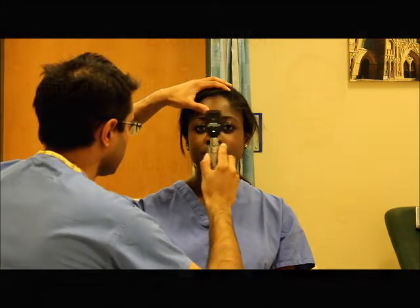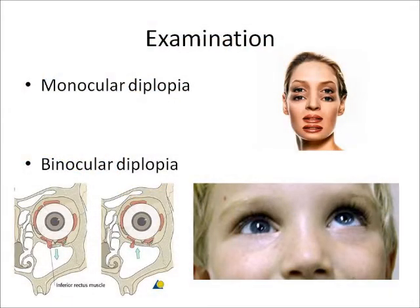The next examination is to distinguish, whilst covering one eye, whether the patient has monocular diplopia, which may be a sign of a penetrating eye injury or rupture of the vitreous of the eye. Binocular diplopia may be a sign of an orbital floor fracture or entrapment of the rectus muscles.